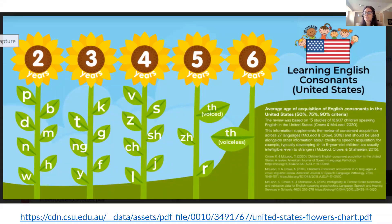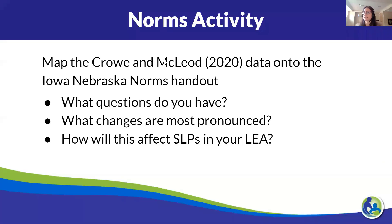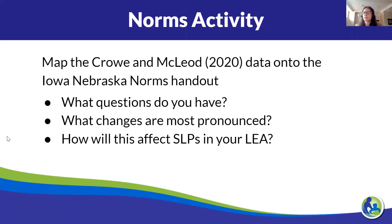I did include links to the pretty infographics — these are the US-specific ones — so you can see the visual of the 90% criterion. They also have the SPASS version. So we're going to break into breakout rooms. If you choose to do this work independently, just don't join the breakout room. Have someone share their screen and pull up the Crow and McLeod norms, then map them onto the Smith et al. hard copy that you have. We're going to look at: what questions does this bring up? What changes seem most pronounced, and how is this going to affect your work — keeping in mind this is one tool in the toolbox, one piece of information.